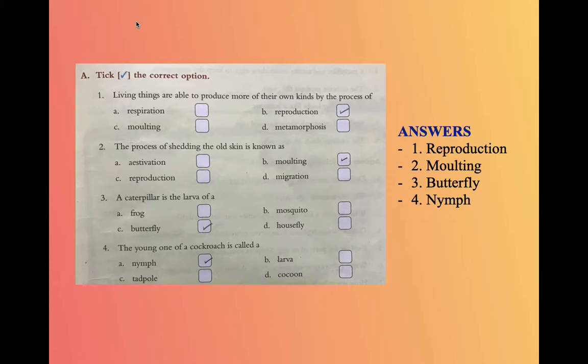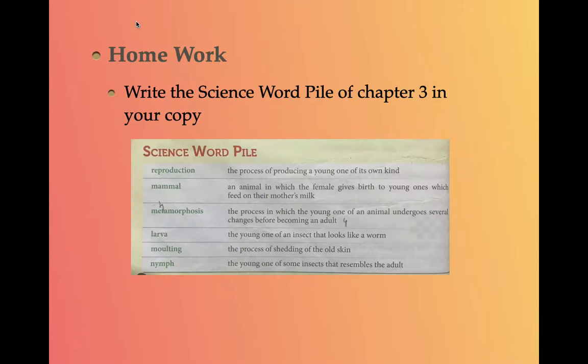Coming to the fourth question: The young one of a cockroach is called? The answer is A: nymph. That's all about today's topic. For homework, you have to write the science word pile of Chapter 3 in your copy. Thank you, have a nice day.